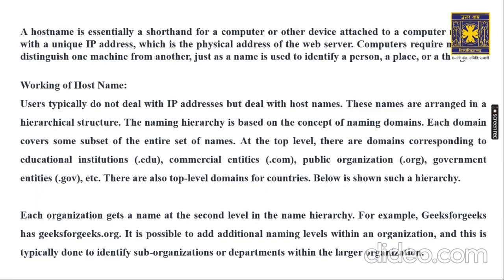These are top-level domains, and after that you have a hierarchy where each organization gets a name at the second level. For example, geeksforgeeks is written as geeksforgeeks.org. It is also possible to add additional naming levels within an organization to identify sub-organizations or departments. For instance, science.geeksforgeeks.org covers science subjects, and under that you can have computerscience.geeksforgeeks.org — that is how hierarchies are maintained for naming.